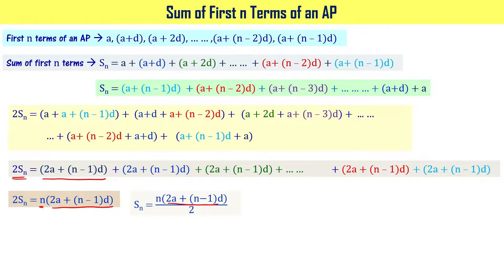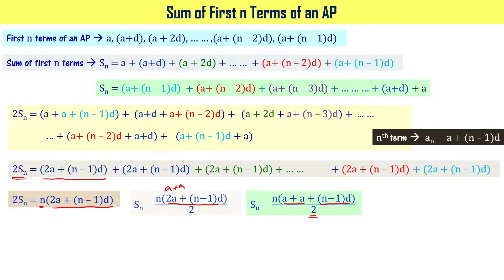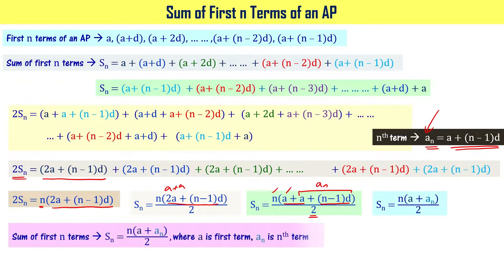We can also write this as: Sn equals n times [a plus (a + (n-1)d)] divided by 2, which equals n times (a plus an) divided by 2. Here a is the first term and an is the nth term.